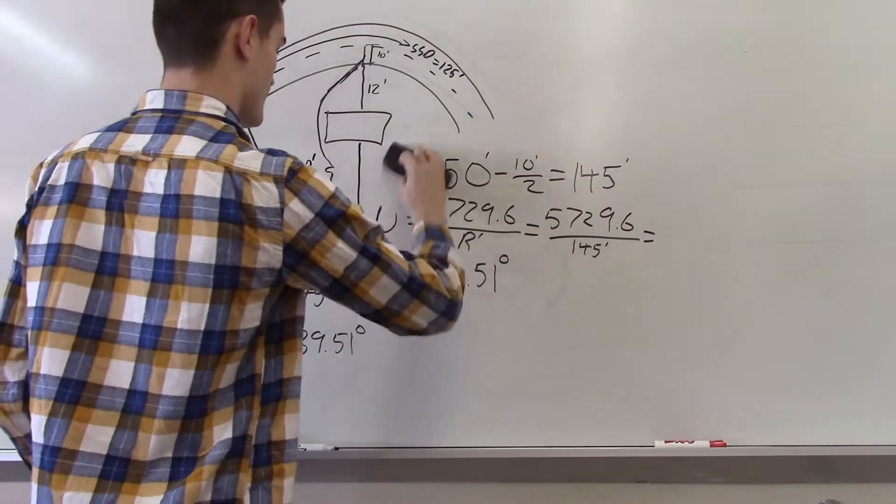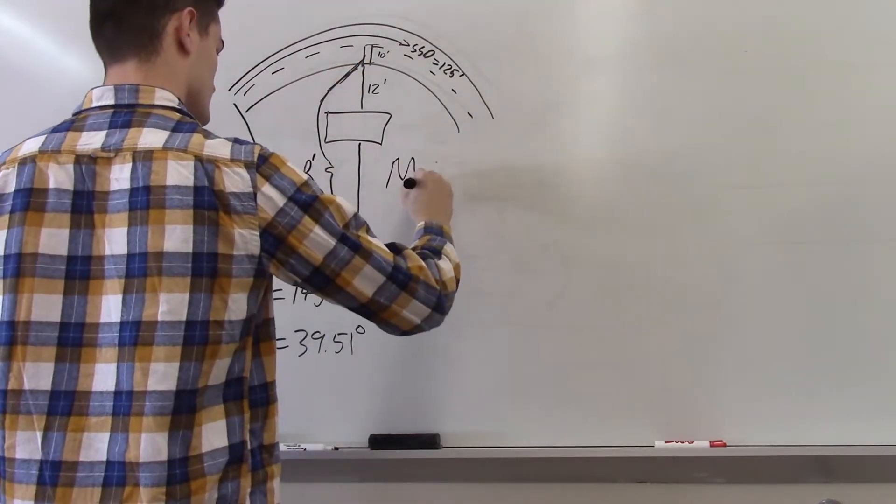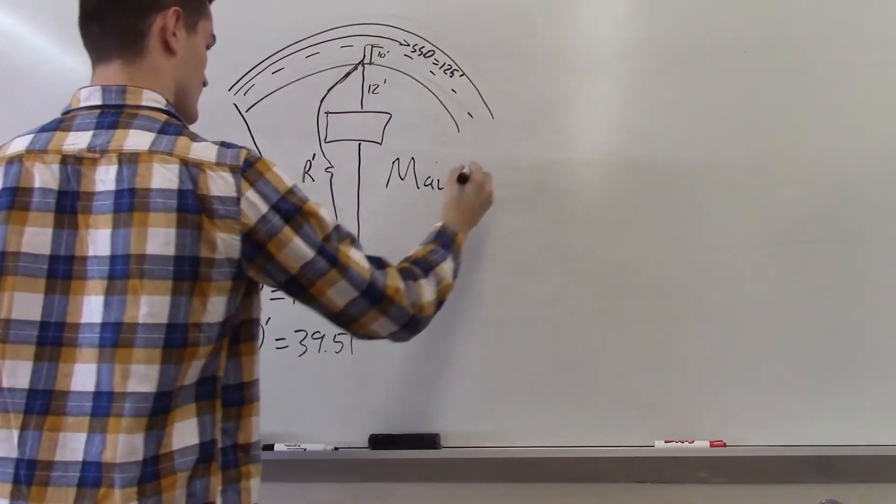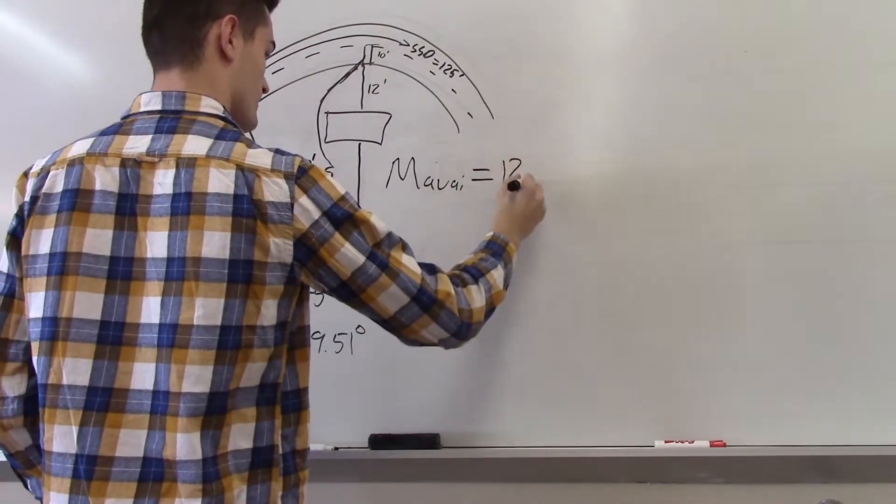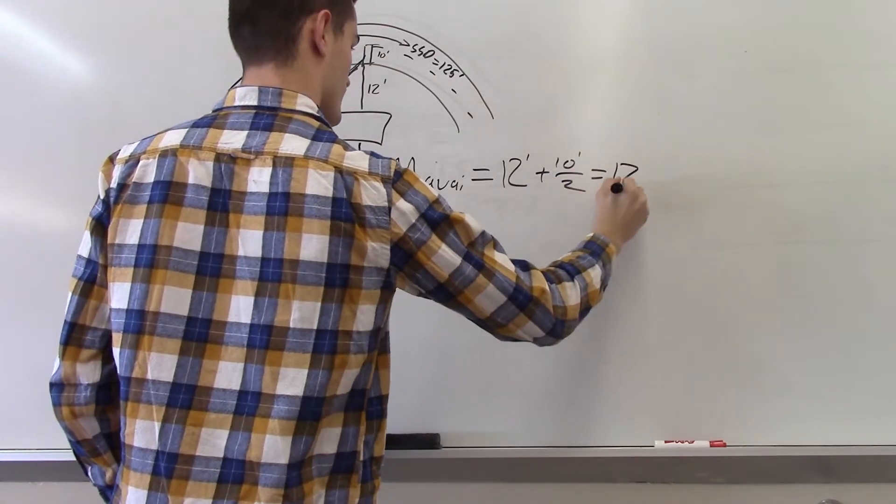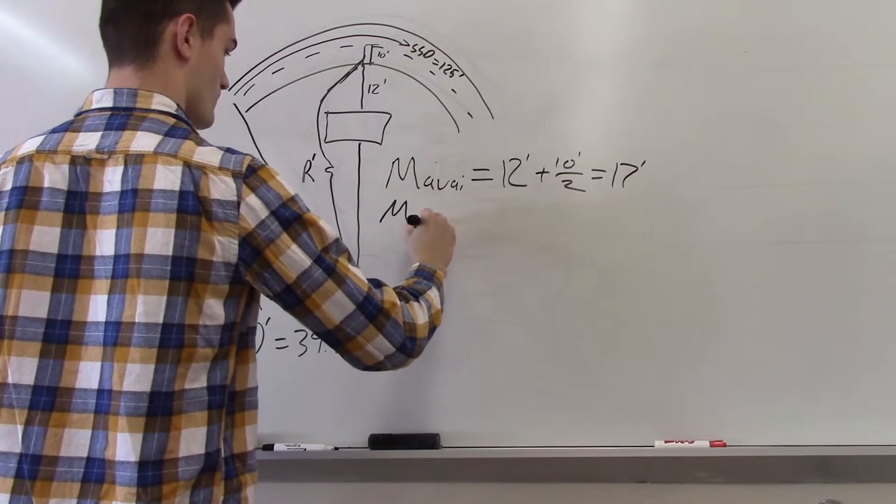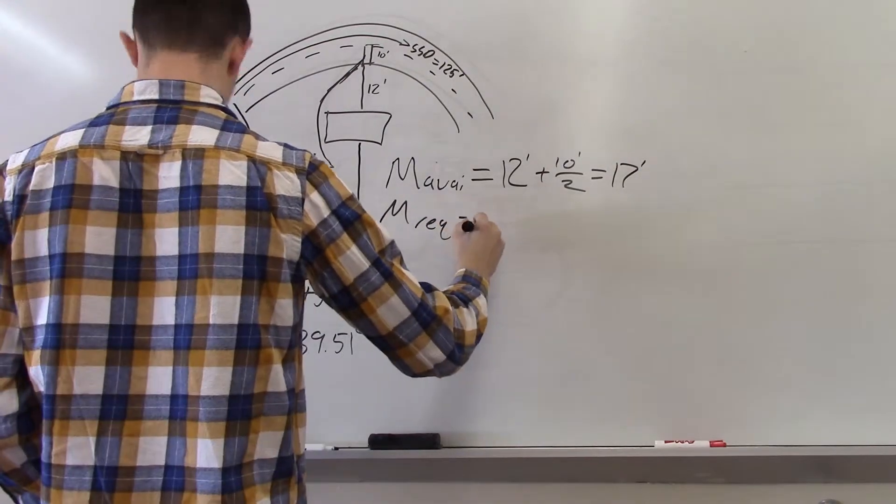Next, we will solve for M available to see how far the distance from the building to the center of the inside lane is for the current road design. This is calculated by simply adding the distance from the road to the building, which is 12 feet, and half of the lane width, which is 5 feet. This makes M available equal to 17 feet.